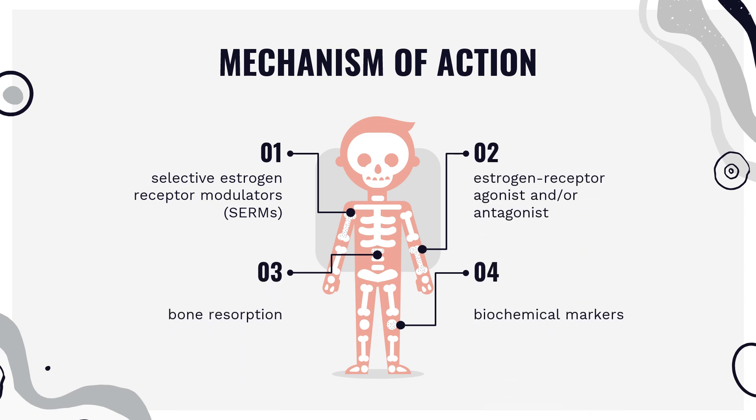Mechanism of action: Bazedoxifene belongs to a class of compounds known as selective estrogen receptor modulators (SERMs). It acts as both an estrogen receptor agonist and/or antagonist, depending upon the cell, tissue type, and target genes. Bazedoxifene decreases bone resorption and reduces biochemical markers of bone turnover to the premenopausal range. These effects on bone remodeling lead to an increase in bone mineral density (BMD), which contributes to a reduction in the risk of fractures. Bazedoxifene functions primarily as an estrogen receptor antagonist in uterine and breast tissue.